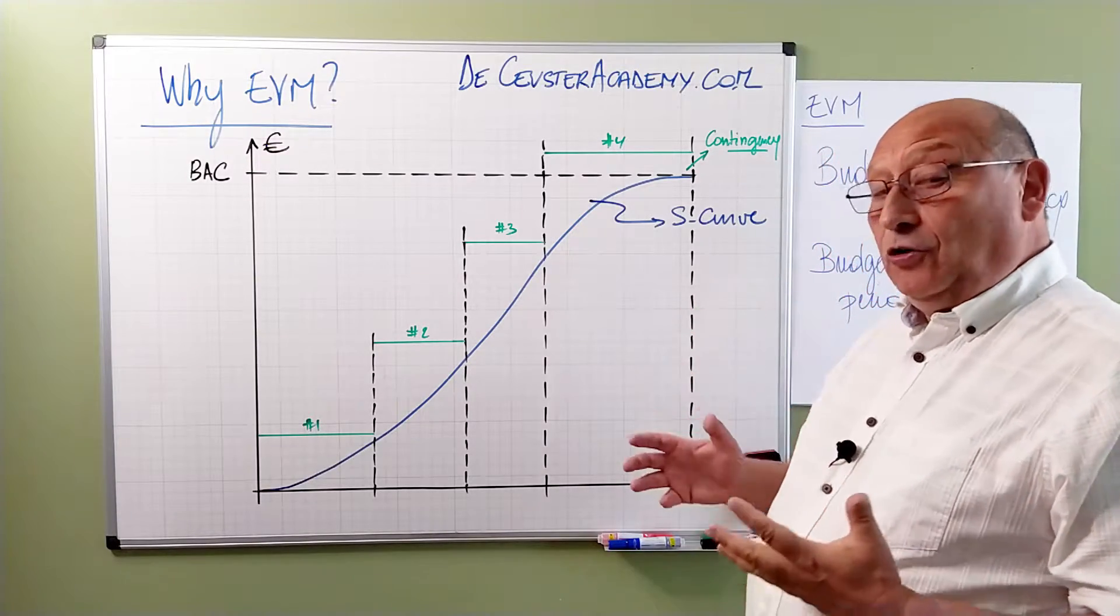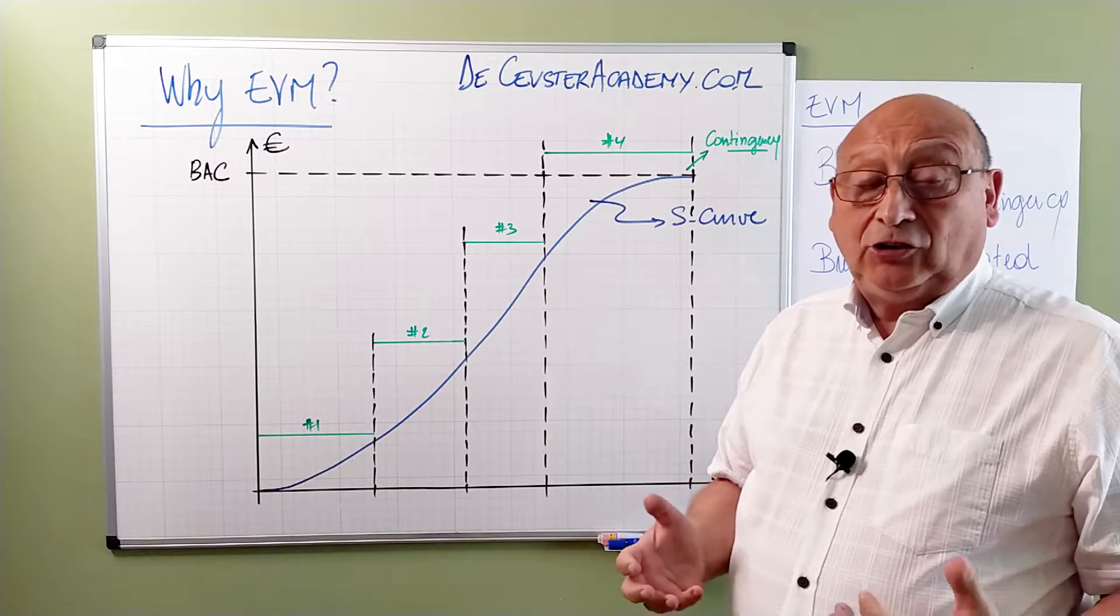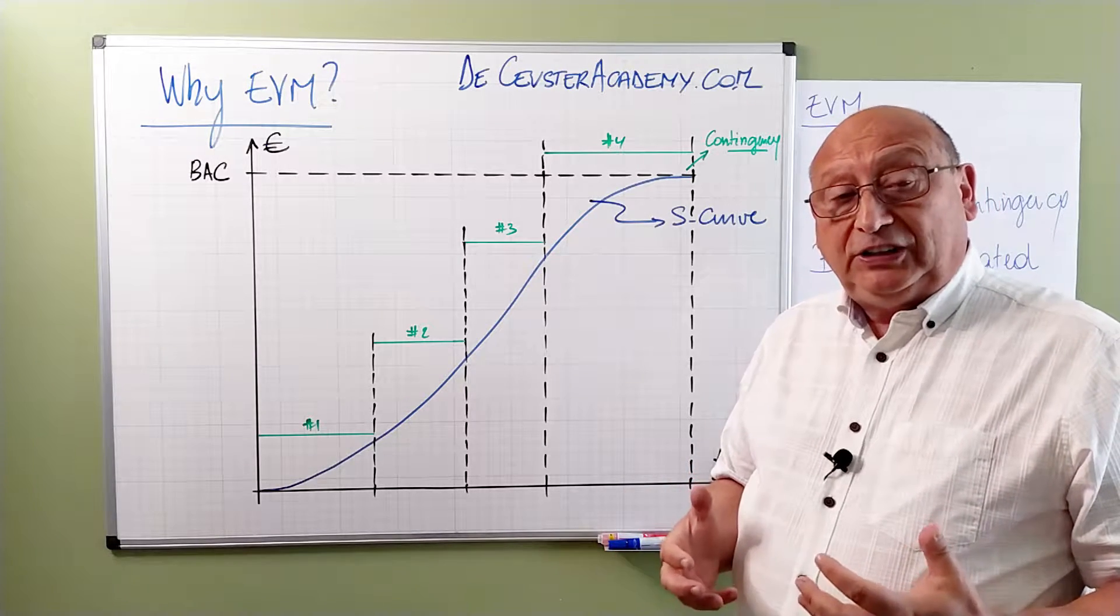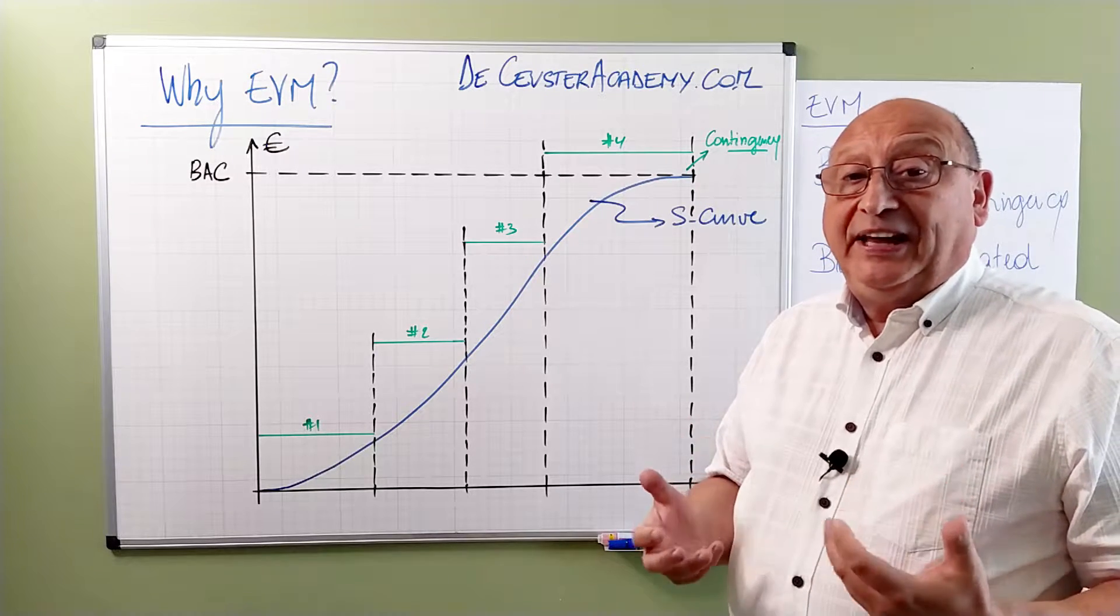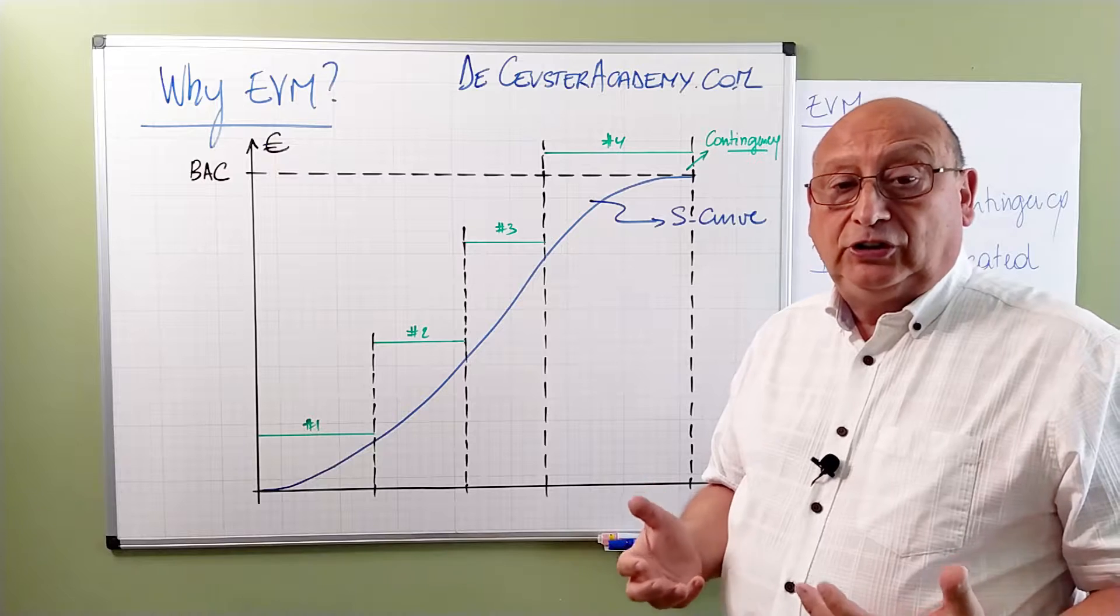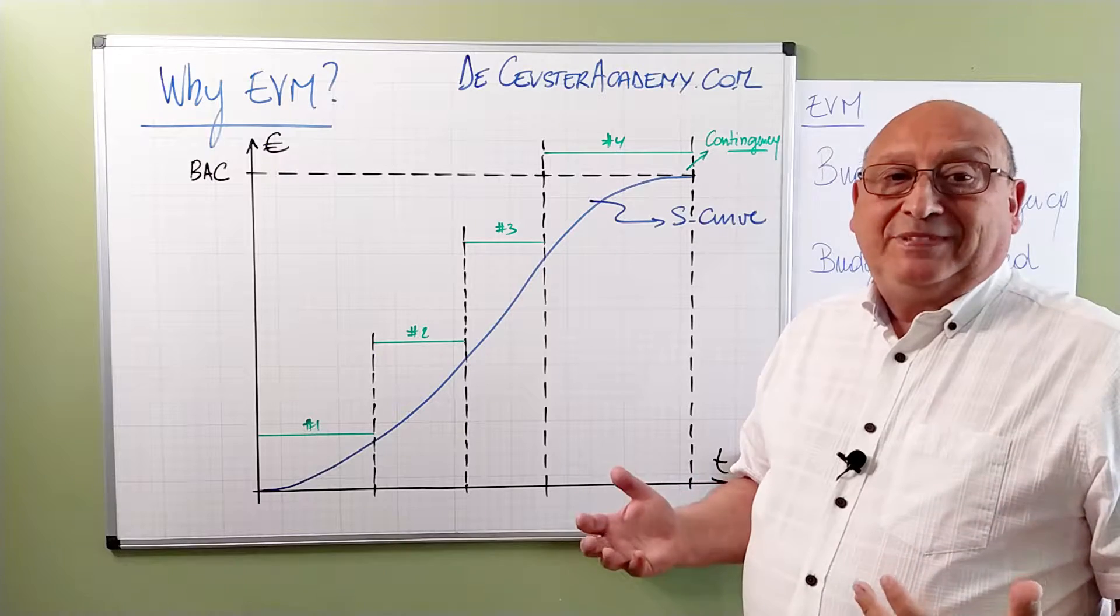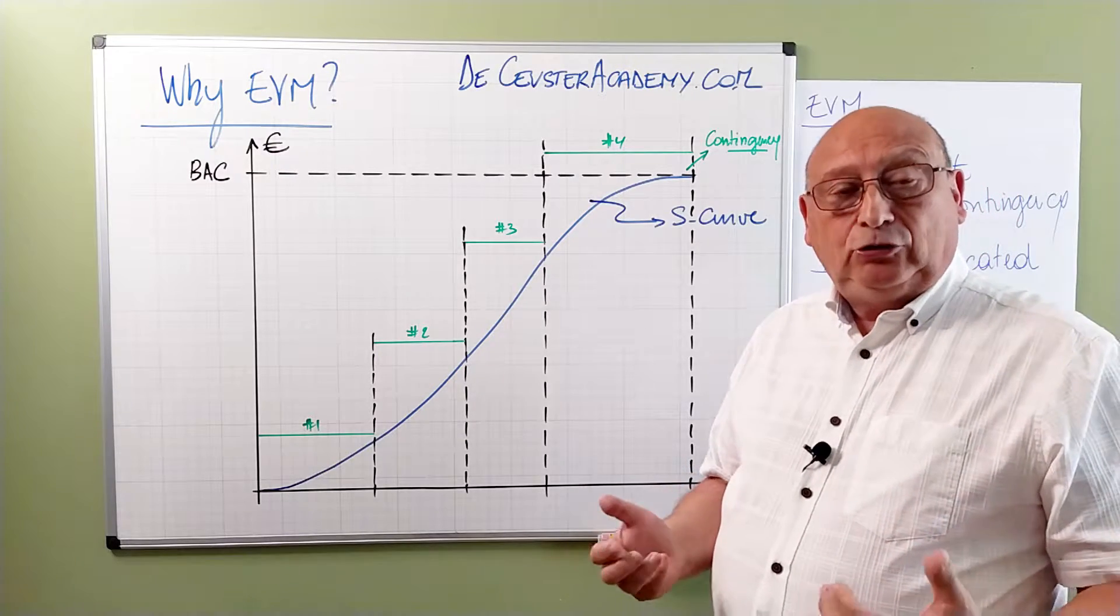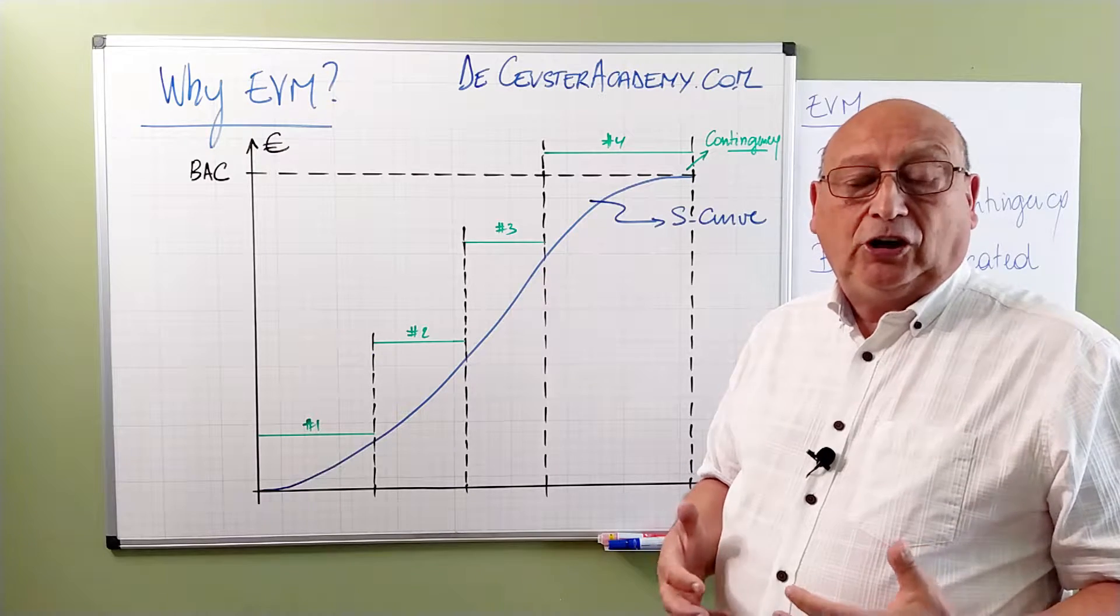Now we don't have the management reserve as part of the budget. Why is that? Because management reserve is reserved for things that are not included in the original scope of the project. We can make a decision to add it to the scope, but originally it's not part of the project as such, and it's not part of the budget.